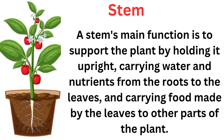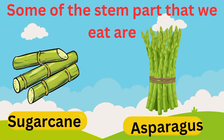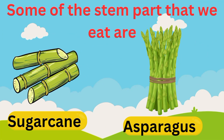Stem. A stem's main function is to support the plant by holding it upright, carrying water and nutrients from the roots to the leaves, and carrying food made by the leaves to other parts of the plant. Some of the stem parts that we eat are sugarcane and asparagus.